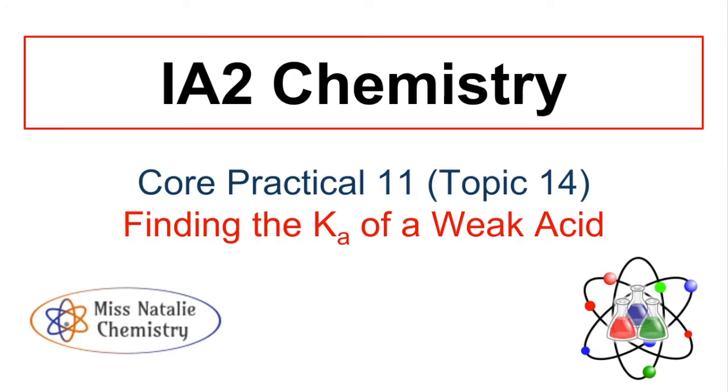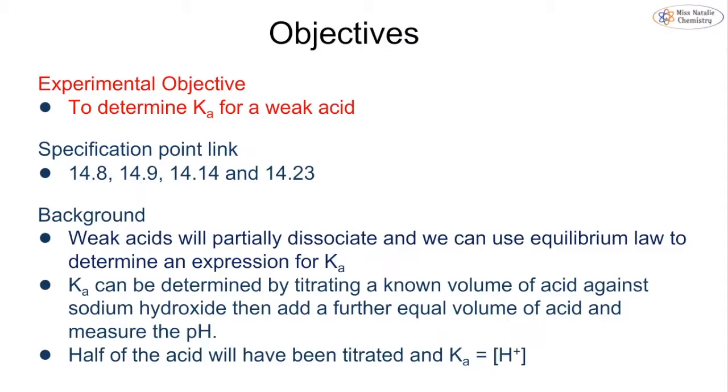This video is going to be looking at Core Practical 11 and 12 for the Unit 6 paper in Edexcel A2 Chemistry. We're going to be looking at topic 14, finding the Ka of a weak acid, and Core Practical 12 is looking at electrochemical cells, which is topic 16.